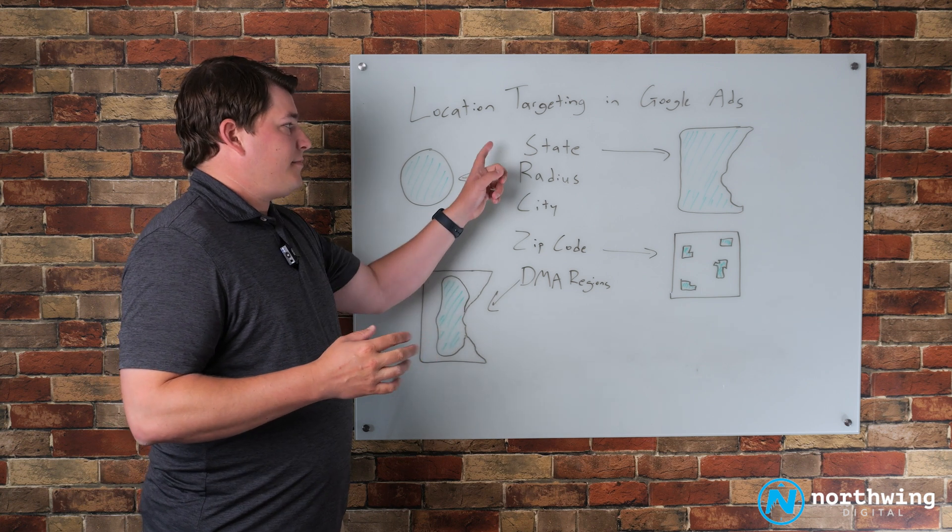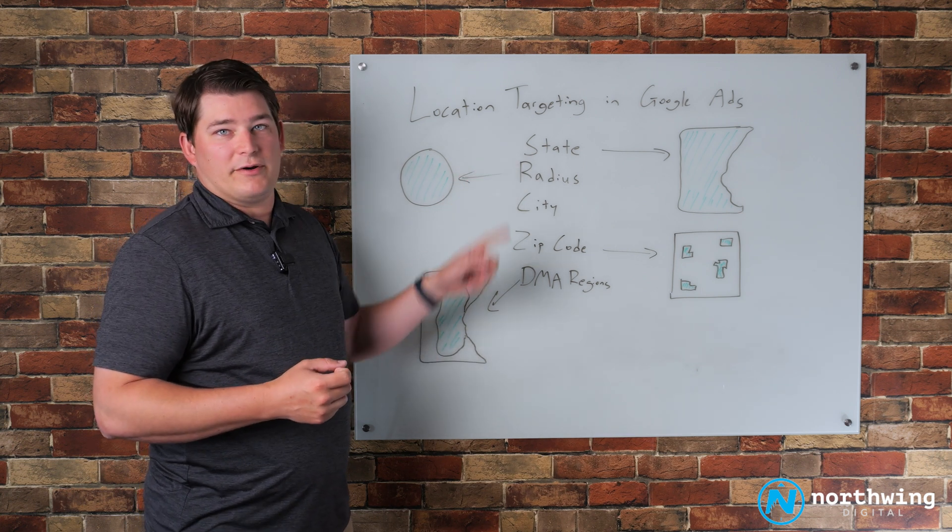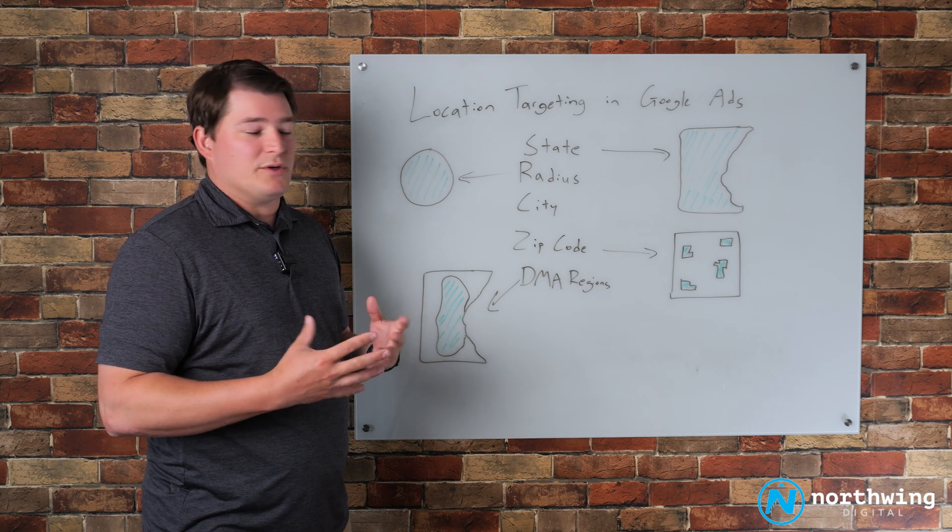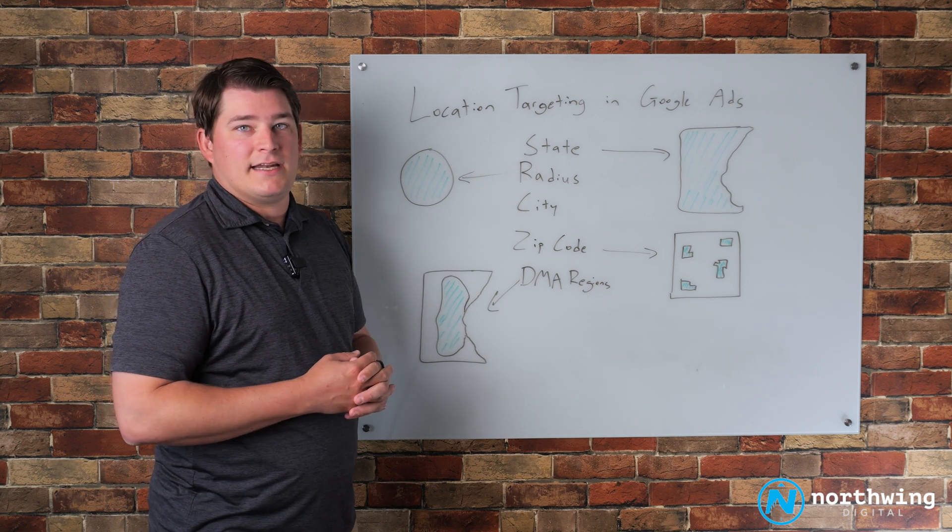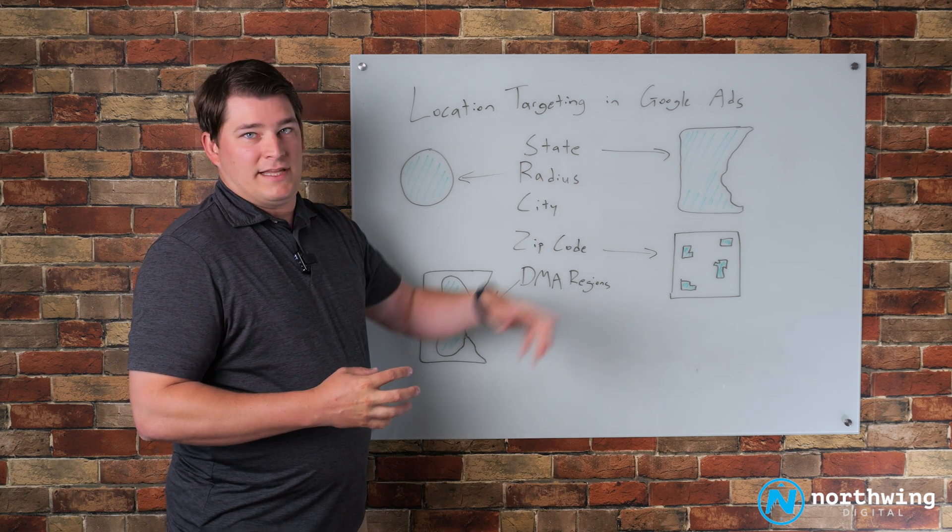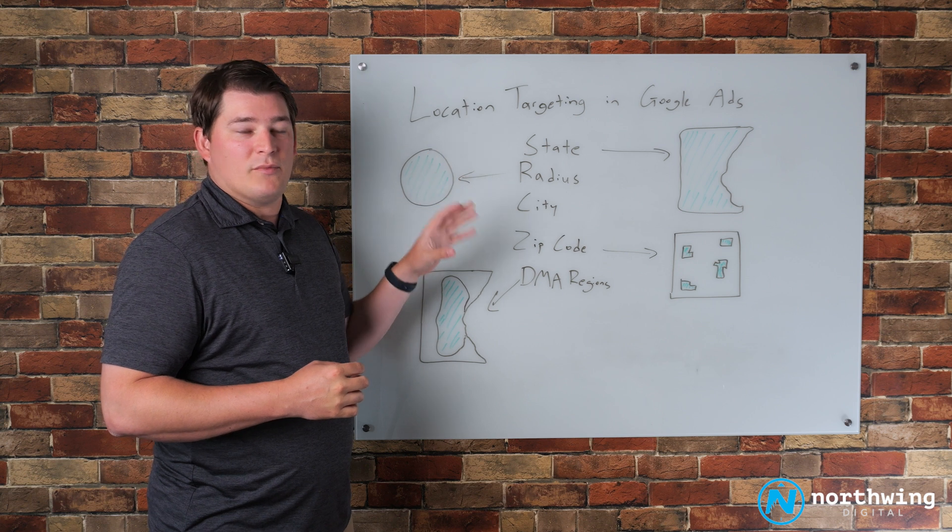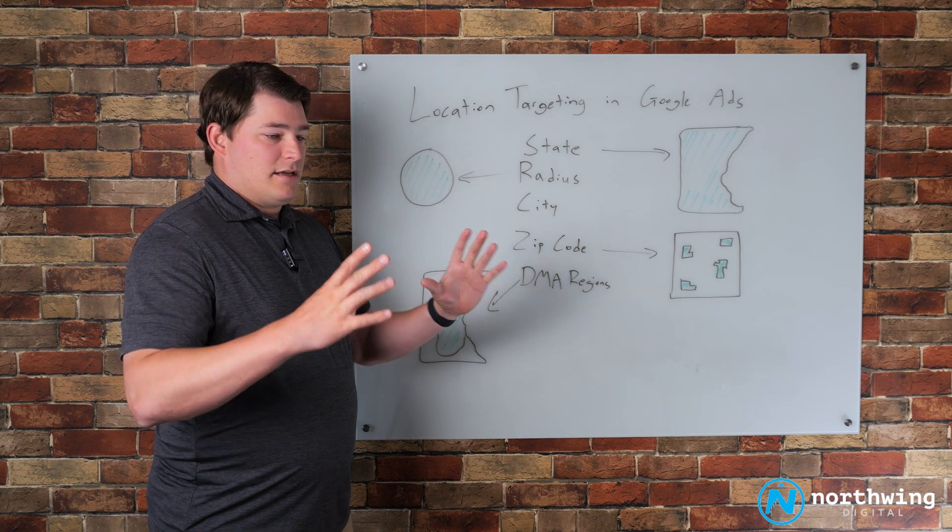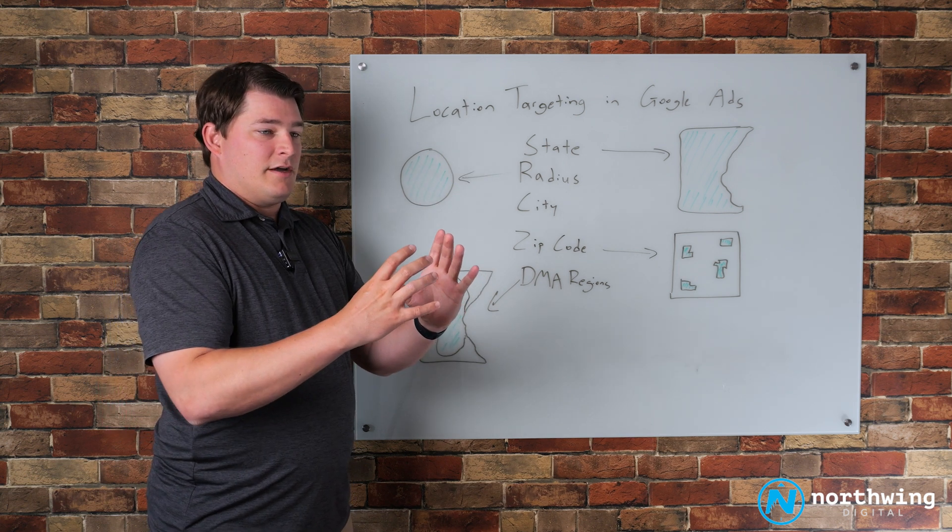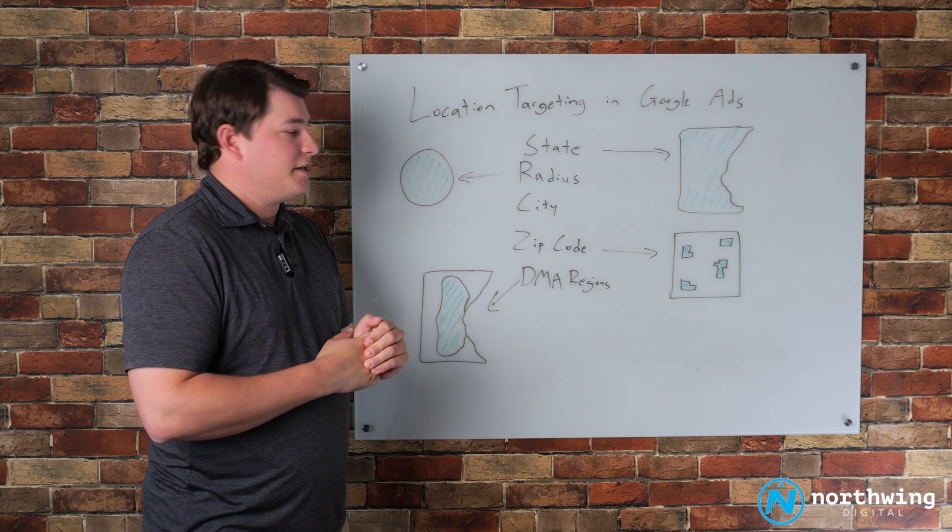Obviously, if you're targeting an entire state, this is very straightforward. If it's part of your campaign goals to target an entire state, you type that state in, the state shows up, and you're able to advertise within the boundaries of that state. Where this gets a little bit more granular is the tighter of a location that you want to focus on. There's a couple different ways to approach that.